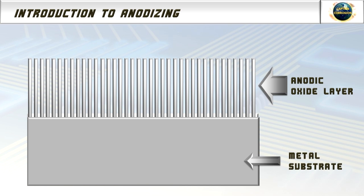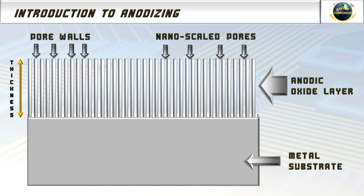The created anodic oxide layer uniformly covers the whole anodized substrate, and it usually has a thickness up to tens or even hundreds of microns, depending on the anodizing parameters. It must also be noted that the anodic oxide layer may contain nanoscaled pores, which allow the electrolyte to reach the metal substrate during the anodizing process. At the bottom of these pores, only a very thin nanometric oxide layer separates the metal substrate from the environment.